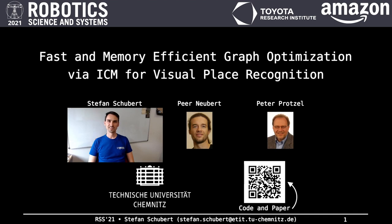Hi, I'm Stefan Schubert from the Chemnitz University of Technology in Germany. This video gives you an introduction to our paper about a fast and memory-efficient graph optimization via iterated conditional modes for visual place recognition, which is joint work with Per Neubert and Peter Protzel.